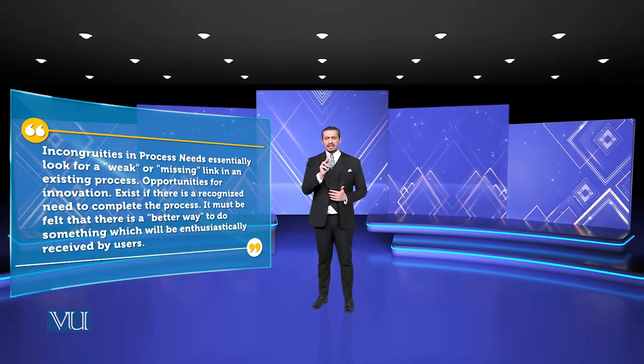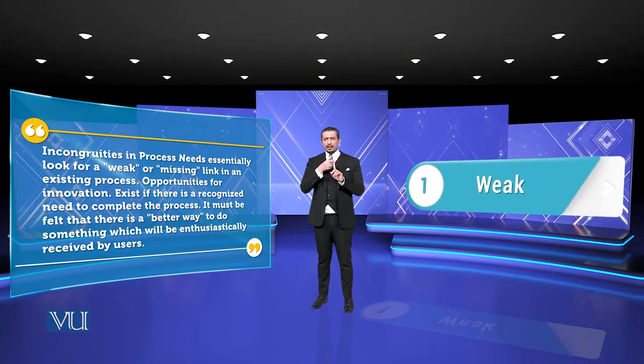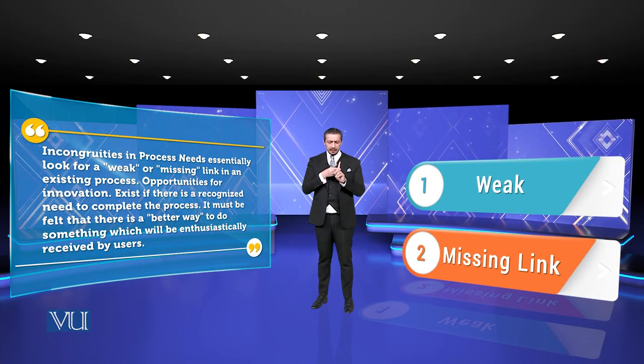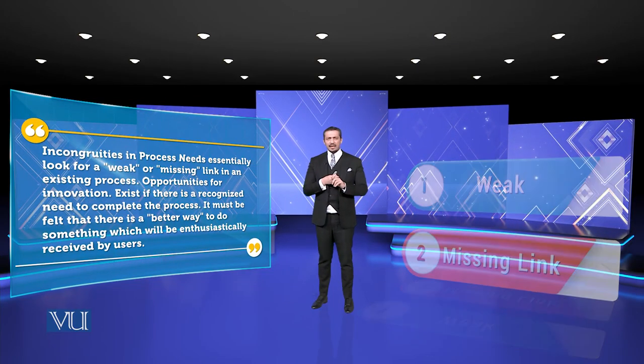In process need, there are two key things: number one is a weak link, and number two is a missing link. Let us look at an example of a missing link.